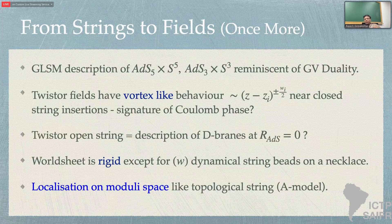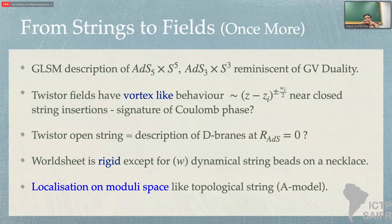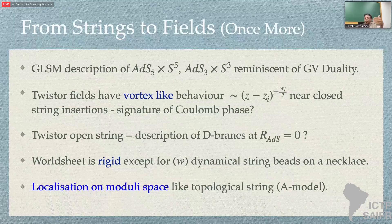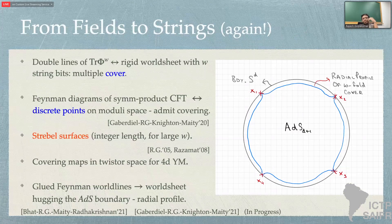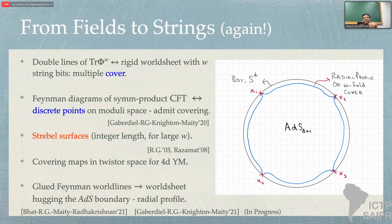Another key feature is that the worldsheet is rigid. In each spectrally flowed sector there are a finite number W of string beads on a necklace, which gives exactly what the Yang-Mills spectrum gives you. There's really not much dynamics on the worldsheet, and this is also reflected in the localization on moduli space that Matthias mentioned that correlators exhibit — very much like the A model. This is much closer in many ways to what we had for the conifold and Chern-Simons theory. Coming from fields to strings, this picture of a rigid worldsheet is very much like the 't Hooft picture of how double-line diagrams are glued up, because you can think of each of these strips as rigid strips.